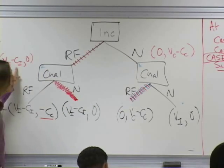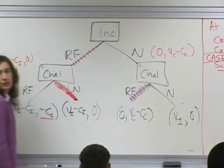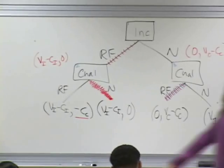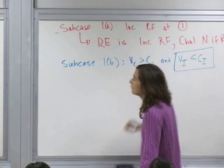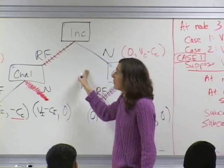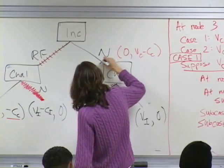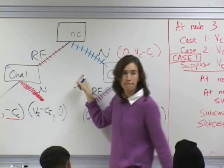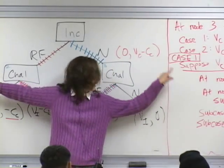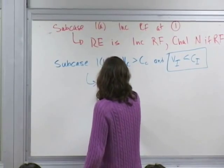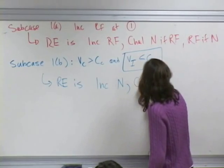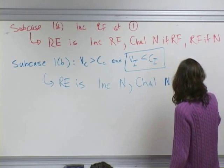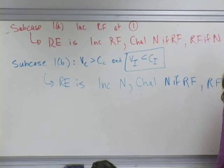In subcase 1B, the incumbent prefers a negative number or zero—so rather have the zero. The rollback equilibrium is: the incumbent does not raise funds, the challenger does not raise funds if the incumbent does, and raises funds if the incumbent does not. You might notice some interesting similarities and differences between the equilibria associated with different subsets of this family of games.